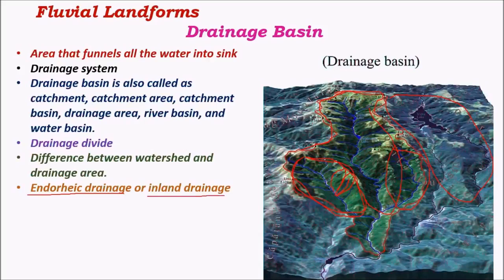When the sink of a drainage system is an inland lake or inland body rather than the sea, such a drainage system is called endorheic drainage or inland drainage. Here the water doesn't flow into the sea — it ends up in a lake or inland river. For example, some rivers end up in the Dead Sea and various other salty lakes. Drainage pattern refers to the arrangement of tributaries and the main trunk — that is, the angles tributaries make with the main trunk during convergence and the overall shape of the river system.